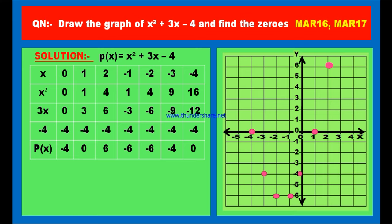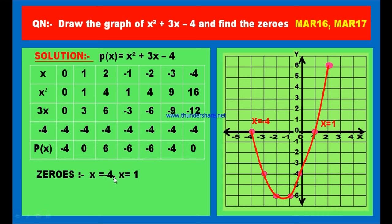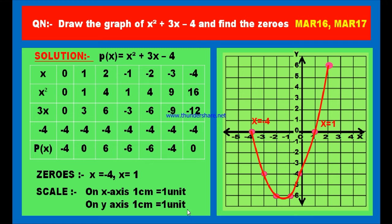Now we join the plotted points using freehand with a pencil, and we get a parabola. This parabola intersects the x-axis at two points. The first point is where x equals minus 4 and the second is where x equals 1. These values — x equals minus 4 and x equals 1 — are the zeros of the polynomial, i.e., the points where the parabola intersects the x-axis. Scale: on x-axis, 1 cm equals 1 unit; on y-axis, 1 cm equals 1 unit.